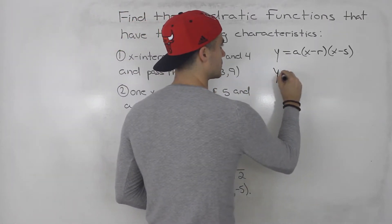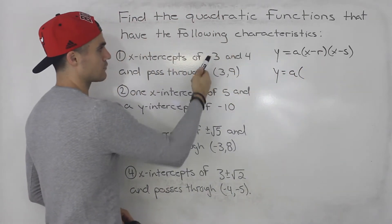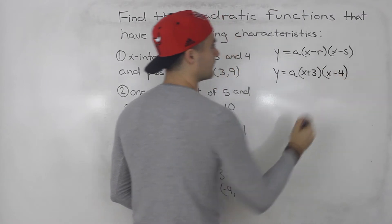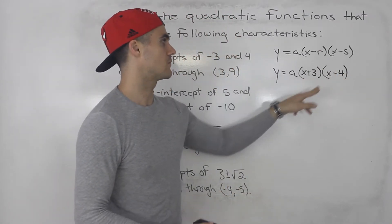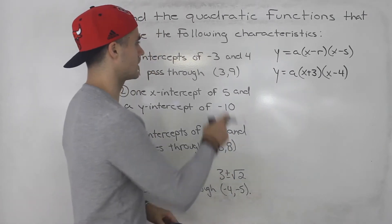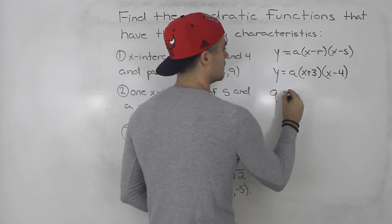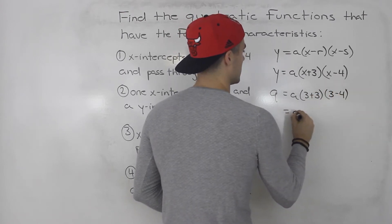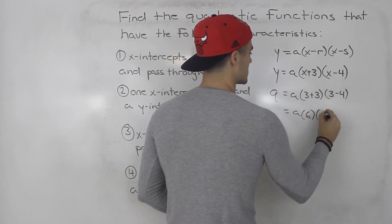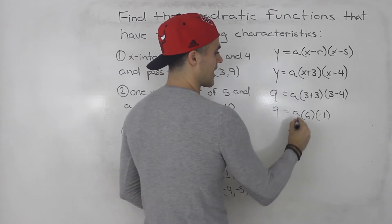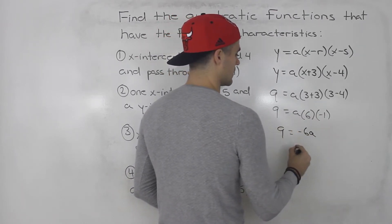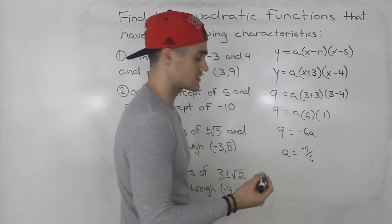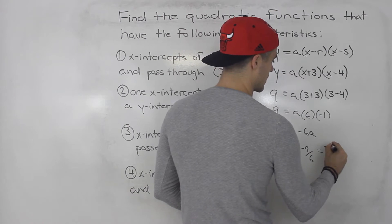So we would have y equals a, then x minus negative three turns into x plus three, and x minus four, since the x-intercepts are negative three and positive four. We plug in the point (3, 9): nine for y and three for x. Three plus three is six, three minus four is negative one. So we have nine equals a times six times negative one, which is negative six a. Dividing both sides by negative six, a equals negative nine over six, which simplifies to negative three over two.